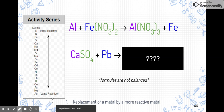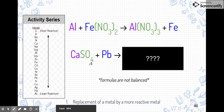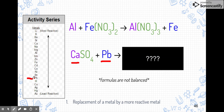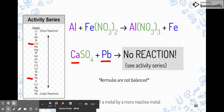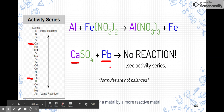Try pausing the video and figuring out the next one yourself — use the activity series. Here we have calcium sulfate reacting with lead. Lead is our single element, and since lead is a metal and calcium is a metal, lead wants to replace calcium. But checking the activity series, lead is quite low while calcium is very high. Because lead is lower and less reactive, lead will NOT replace calcium — this reaction will not occur.